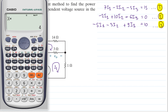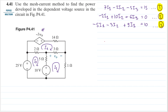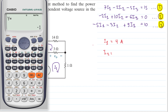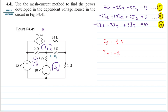The results are: i1 equals 4 amperes — a very nice number; i2 equals minus 1 ampere — also a nice number; and i3 equals 3 amperes.